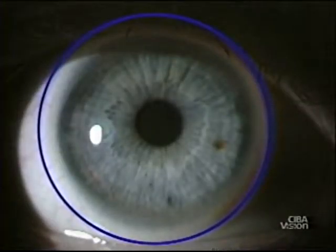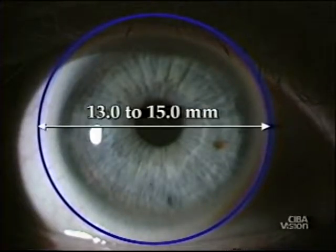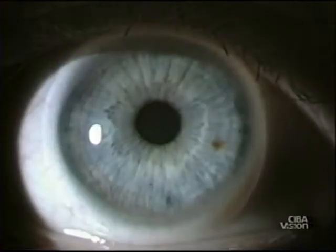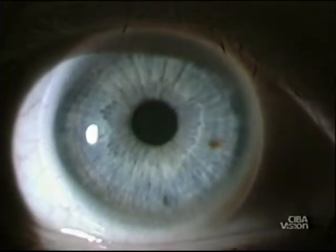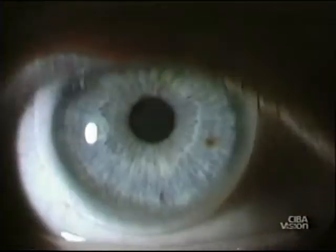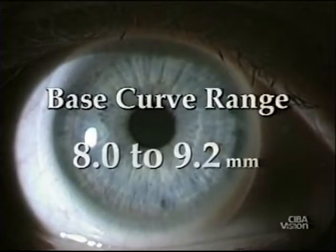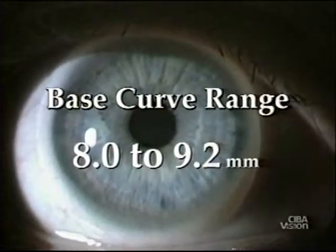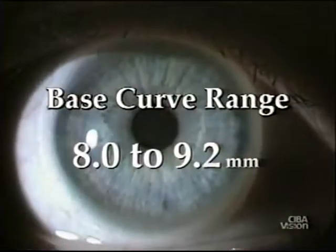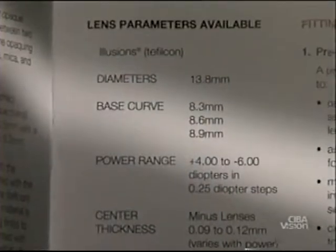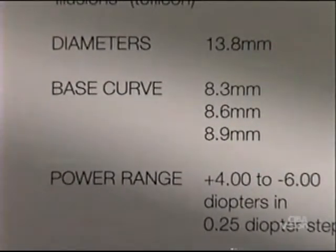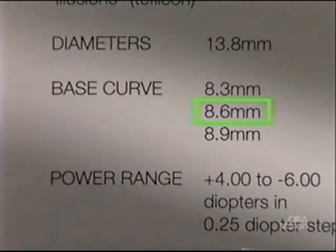The diameter of a soft lens should provide complete corneal coverage. Typical soft lens diameters range from 13 to 15 millimeters. Due to the draping effect of soft lenses, one base curve may fit a range of corneal curvatures. Typical base curves for soft lenses range from 8 to 9.2 millimeters. Start with the base curves suggested by the manufacturer; otherwise, select one from the middle of the available fitting range.